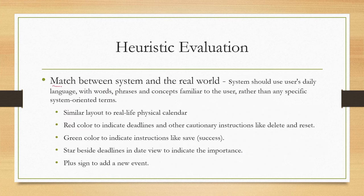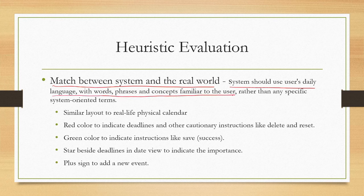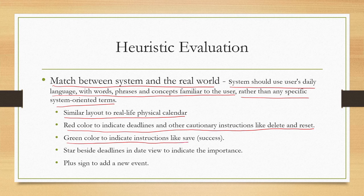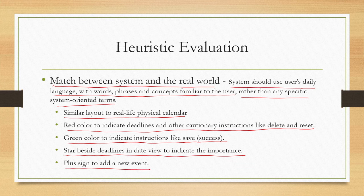The next heuristic is match between system and the real world, meaning the system should use user's daily language with words, phrases and concepts familiar to the user. The designer notes a similar layout to a real life physical calendar, red colour to indicate deadlines and cautionary instructions like delete and reset, green colour for instructions like save, a star beside deadlines to indicate importance, and a plus sign to add a new event.